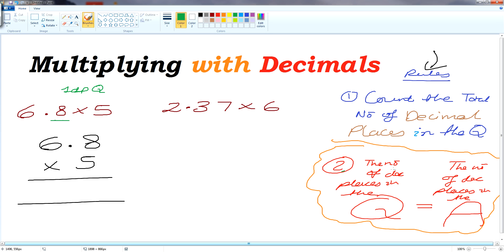Rule 2 says the number of decimal places in the question will be the same in the answer. So I've got one decimal place in my question. I will also have one decimal place in my answer. Lovely. So here's one. So I will have one here.